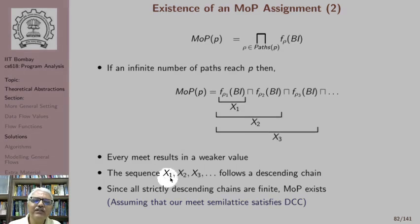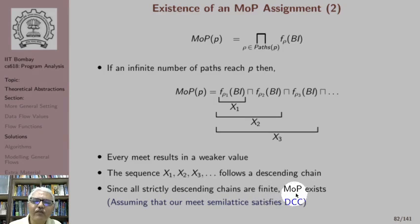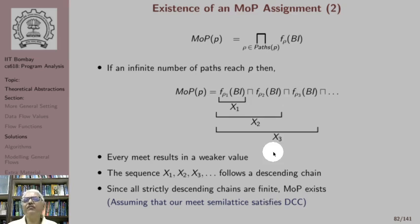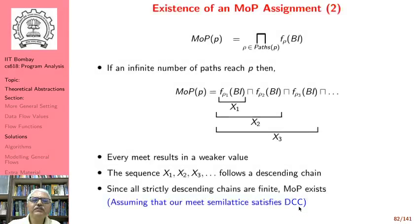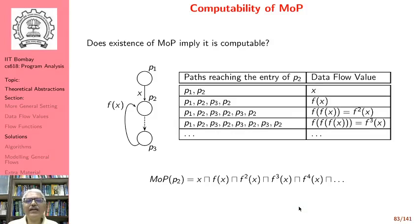The sequence x1, x2, x3 follows a descending chain. Since all strictly descending chains are finite, even if the number of paths is infinite, a finite number of paths will give us the MOP we are looking for. So the meet over paths solution exists, assuming our meet semi-lattice satisfies DCC.